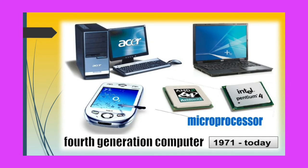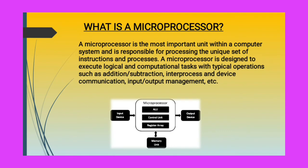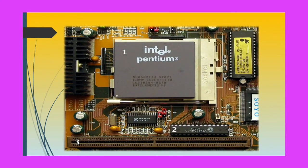The fourth generation of computers took place in 1971 and exists in today's world as well. Each generation was defined by its main component — the fourth generation of computers was defined by microprocessors. A microprocessor is the most important unit within a computer system, responsible for processing a unique set of instructions. It is designed to execute logical and computational tasks with typical operations such as addition, subtraction, inter-process and device communication, and input/output management. This is how a microprocessor from Intel looks like.